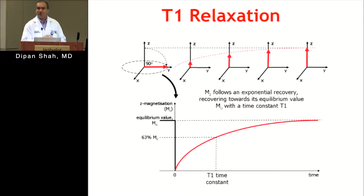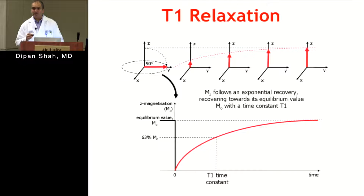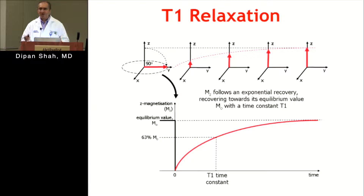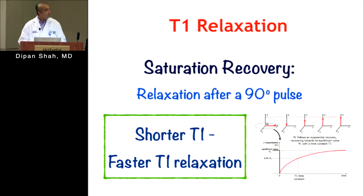After a 90-degree flip you have zero magnetization, and you see the recovery. Something with faster recovery has a shorter T1 time — it reaches 63% at a shorter time interval. Something with slow T1 recovery has a long T1 time. Short T1 time equals fast T1 relaxation; long T1 time equals slow T1 relaxation.